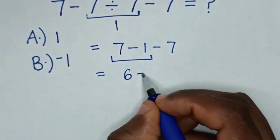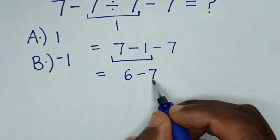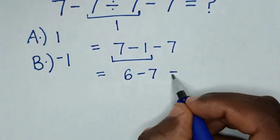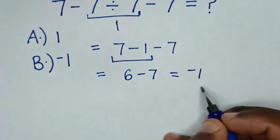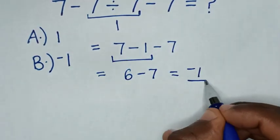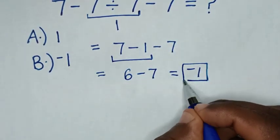Then minus 7. So 6 minus 7 is equal to negative 1. Therefore this is the correct answer.